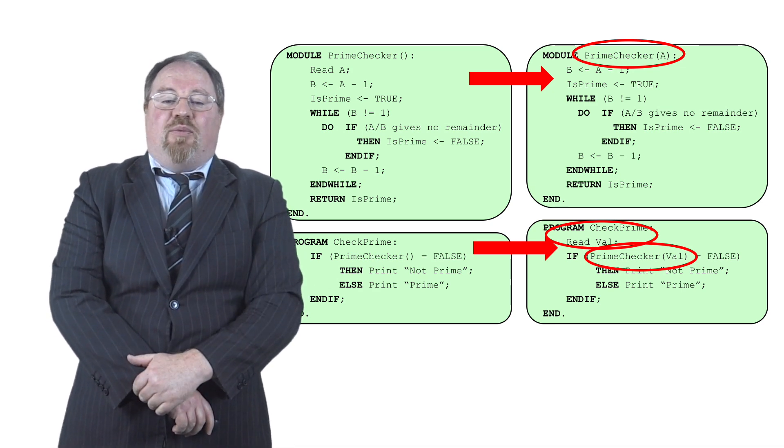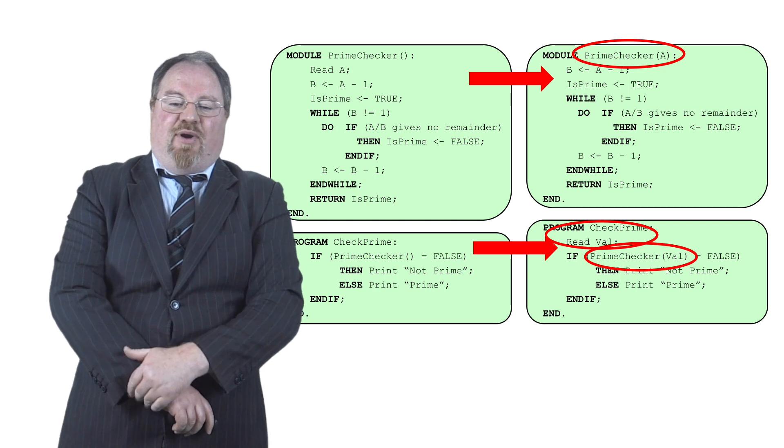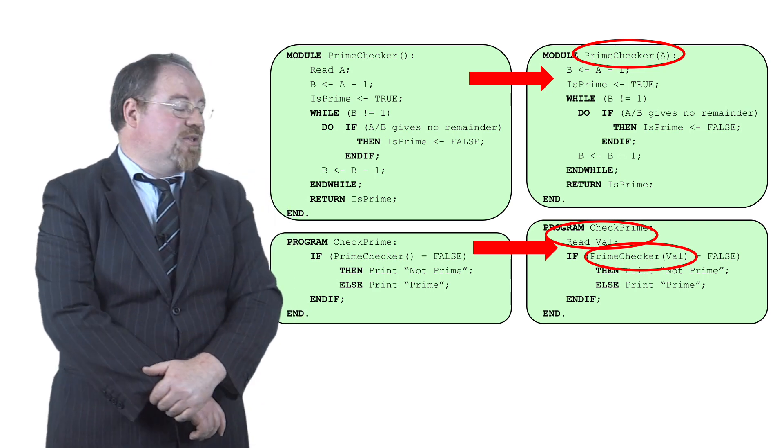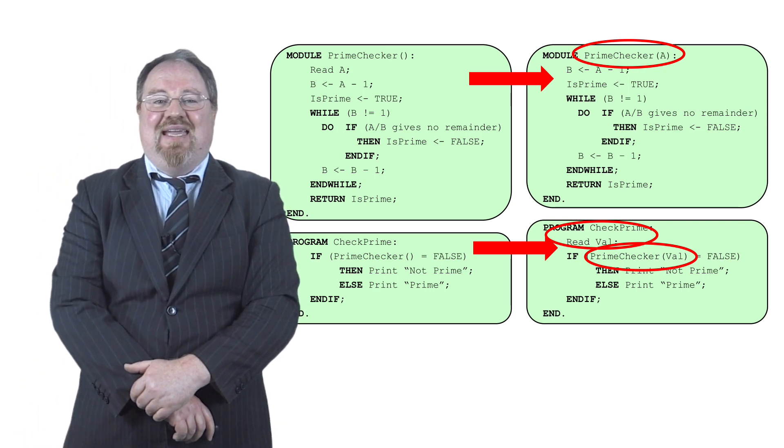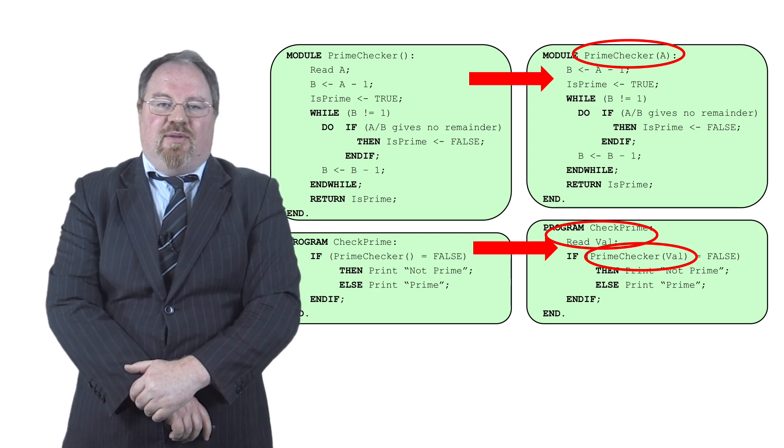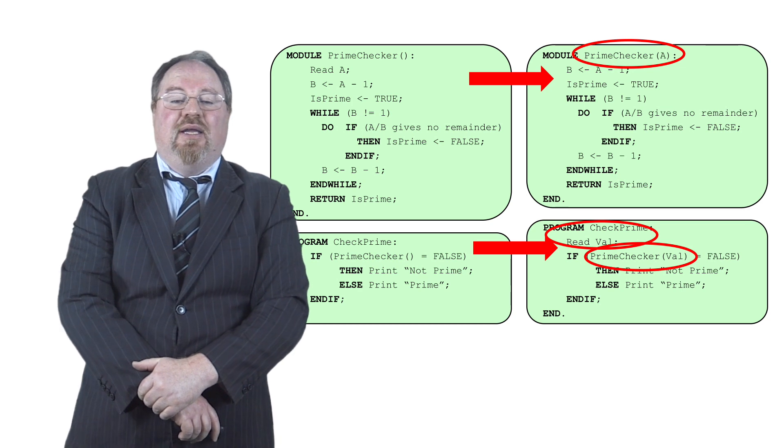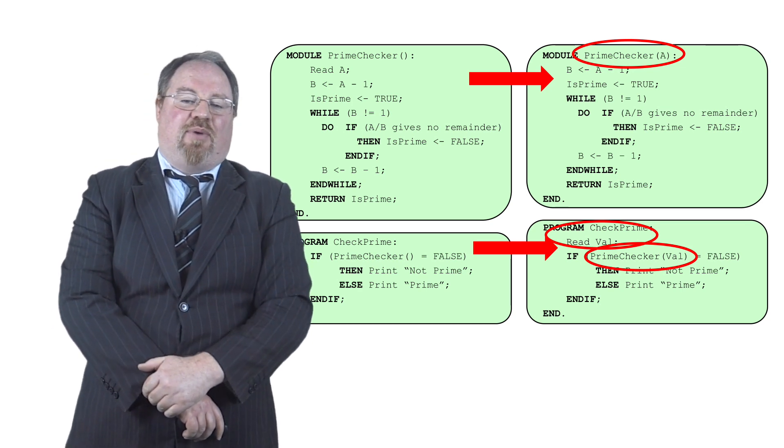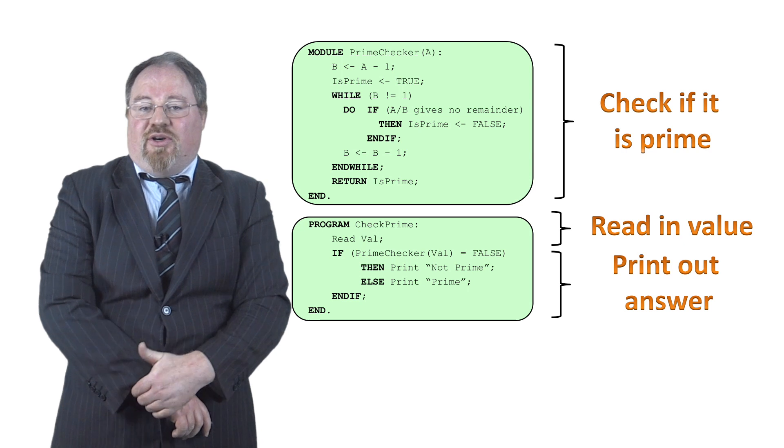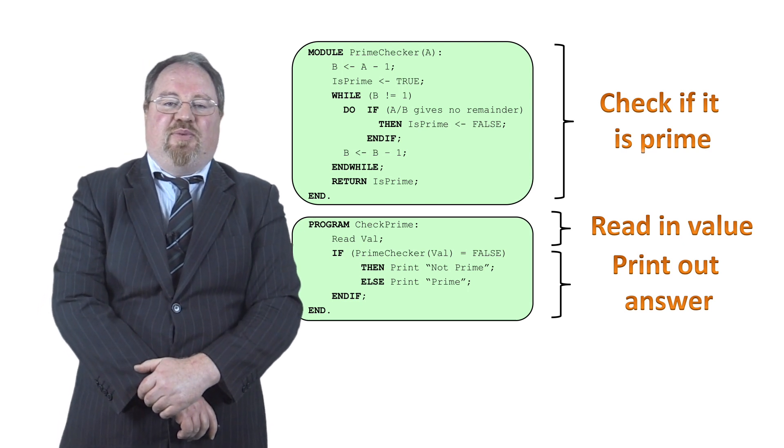And instead of reading in A, we're taking in A as a parameter from the main program. So what goes in as val from the main program becomes A in the module and then we take one away from A and we check in the standard way. And then when we've finished the prime checker module, we simply return is prime or not as before.